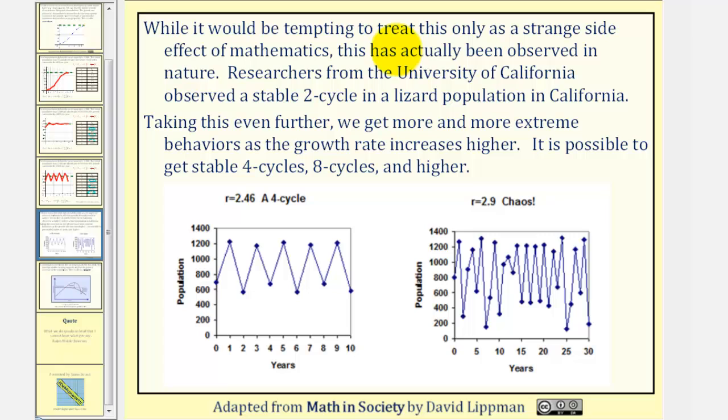While it might be tempting to treat this only as a strange side effect of mathematics, this has actually been observed in nature. Researchers from the University of California observed a stable two-cycle in a lizard population in California.